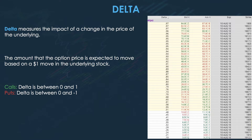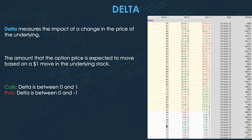Looking at an option chain on Amazon — right now Amazon's trading at about $1,885, and these are August 10th expiration. If you were to buy out of the money, let's say a $1,900 call, your Delta is going to be 0.32. So for every one dollar that Amazon moves up, your contracts are going to move up 32 cents.